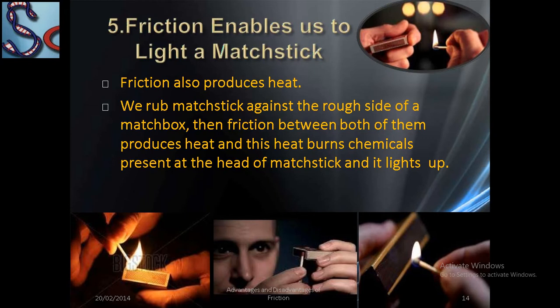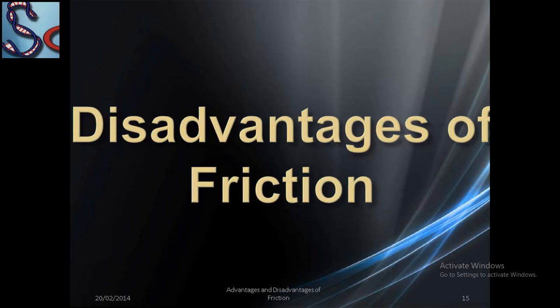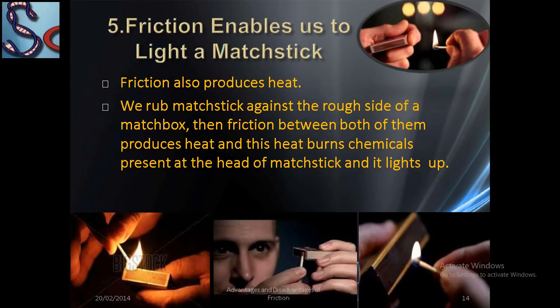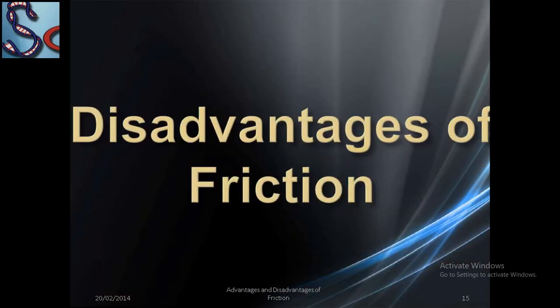Friction enables us to light a match stick. Friction produces heat, and because of this heat the compound on the match stick burns. When we rub the match stick against the rough surface of the match box, friction between both of them produces heat, which burns the chemicals on the head of the match stick and it lights up. If the match box or match stick is wet, there will be less friction and we are unable to light the match stick.